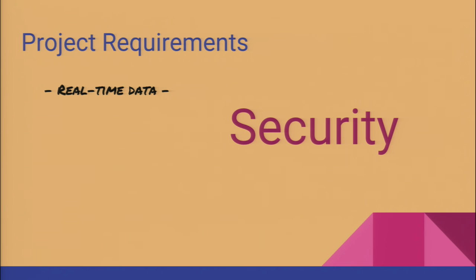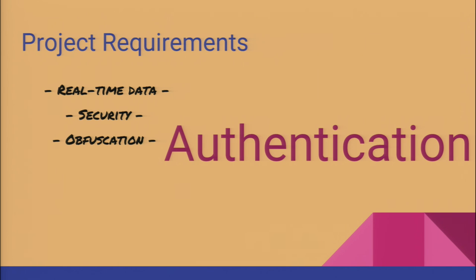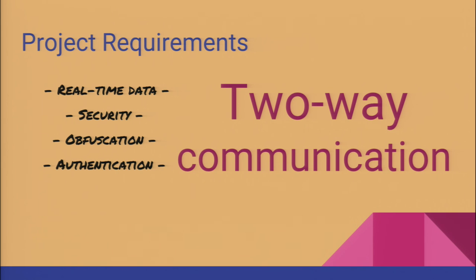We will need to have security in the communications. We're actually sending sensitive information because the recipe is sometimes copyrighted and we cannot let anyone see it. We will need obfuscation because in case the channel gets compromised, nobody would be able to see what is going through. Authentication: if someone knocks at our API or platform claiming to be a device, is it actually a device? And if one device gets compromised, can we disable it? Two-way communications, because we not only get real-time data from the MiniBrews but we will also send actions to them.